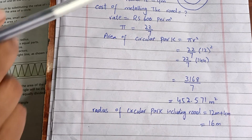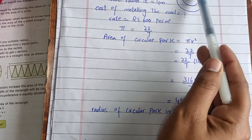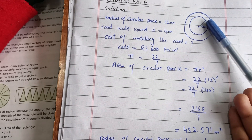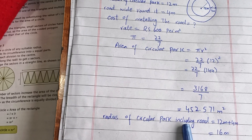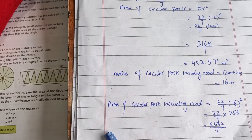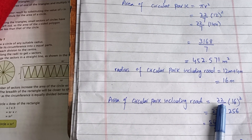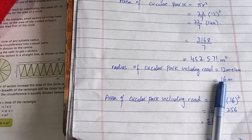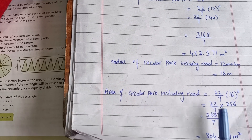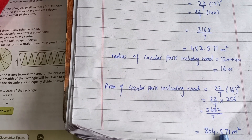Next, we include the road. If we include the road, the total radius becomes 12 + 4 = 16 meters. The area of the circular park including the road is π r² = 22/7 × 16² = 22/7 × 256 = 5632 ÷ 7 = 804.571 square meters.